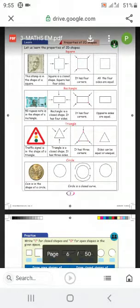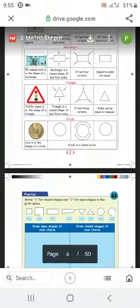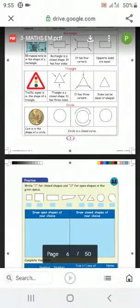Next, triangle. Triangle is a closed shape, it has three sides and three corners. Sides can be equal or unequal. Triangle has three sides and three corners. Next is circle.